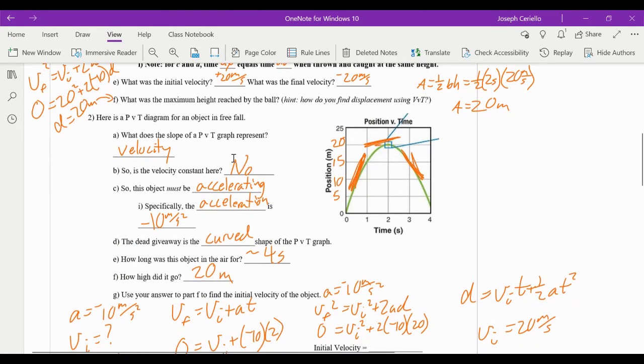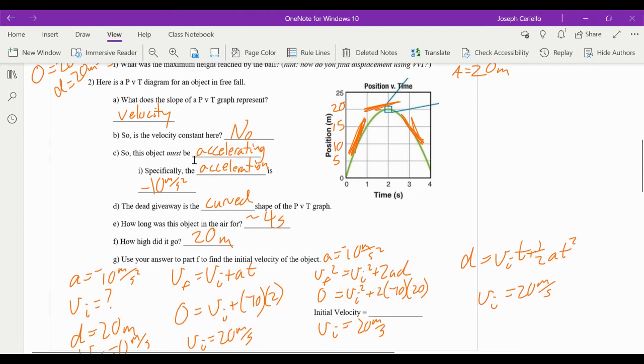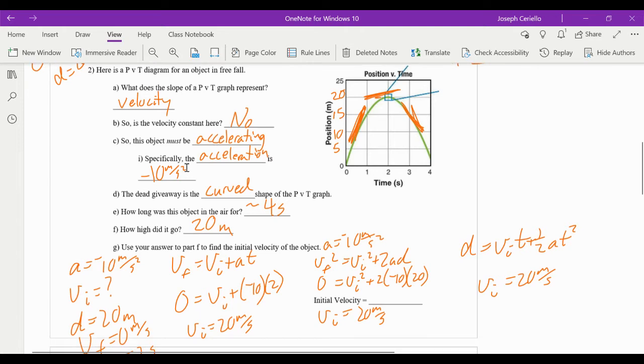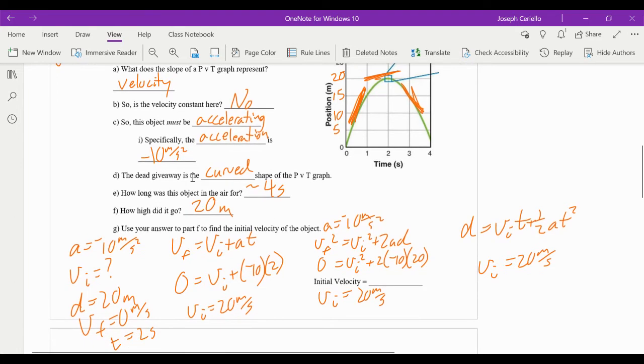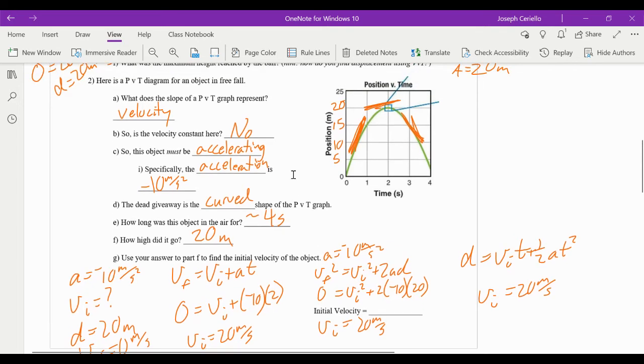So slope of position versus time is velocity. Is the slope here constant? Absolutely not. So the object must be accelerating, right? Because if the velocity is not constant, it is accelerating. Acceleration, by definition, is changing velocity over time. Specifically, the acceleration is negative 10 meters per second squared. The dead giveaway is the curved shape of the position versus time graph. Anytime you see a curved position versus time graph, you know it's going to be an accelerating object.